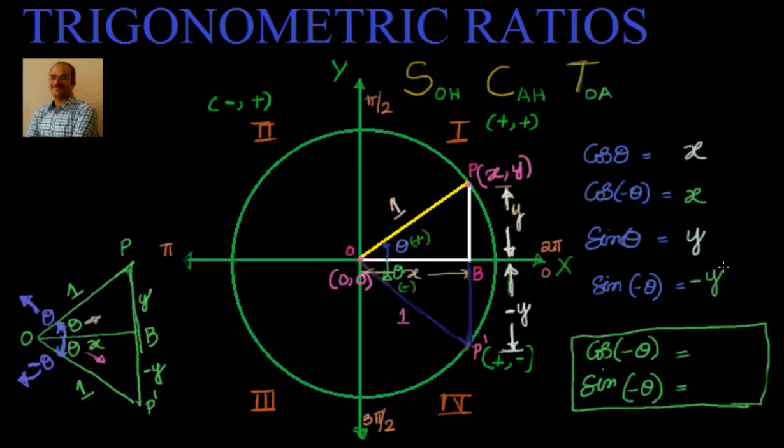You can see very clearly cos of theta is equal to cos of minus theta. That means even though you apply negative, you are finding out trigonometric ratios of negative angle, it is nothing but equal to finding out the same for positive angle where theta is positive. Whereas sin of minus theta is nothing but equal to minus of sin of theta.